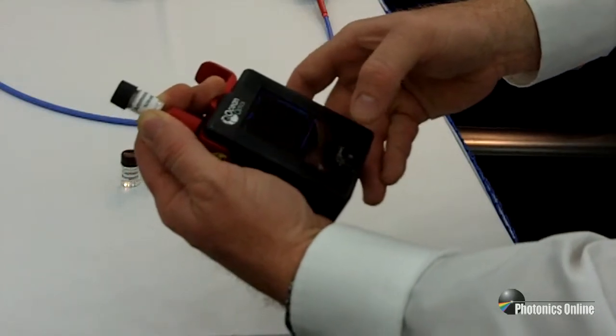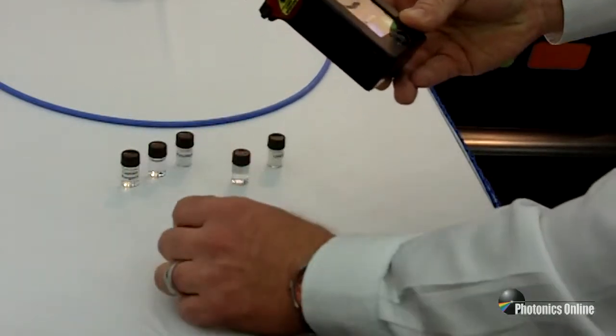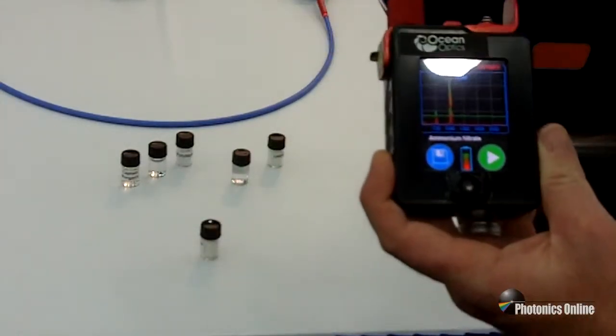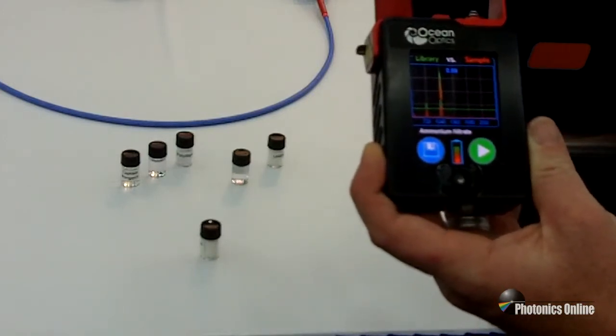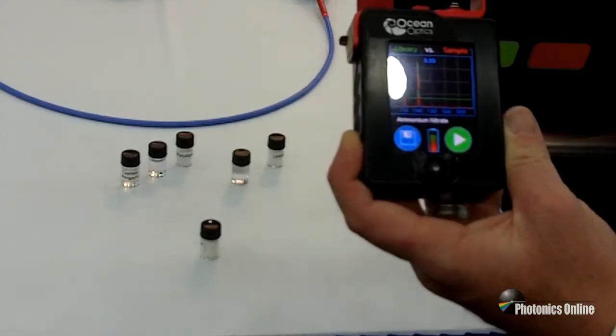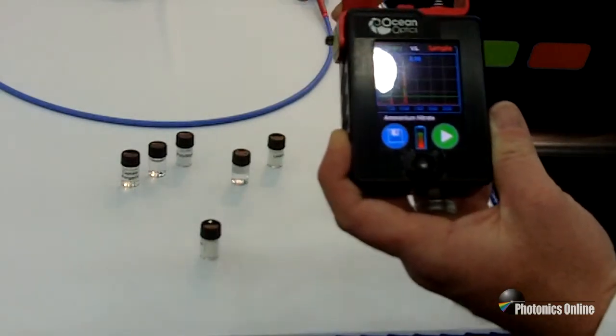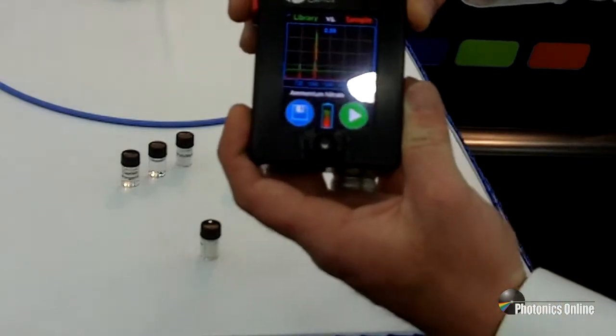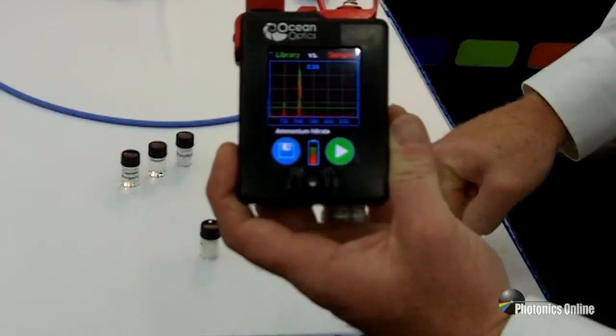The ID Raman Mini actually uses raster scanning to analyze the sample. So it rasters a very small focused beam all over the sample to get a very good clear Raman spectrum. This eliminates any artifacts that may be present from irregular shaped samples or solid samples that are measured. You can see here for this sample of ammonium nitrate, we have a very good match to the library with the sample compound shown in red.